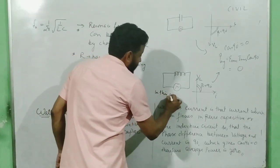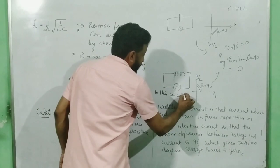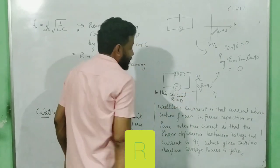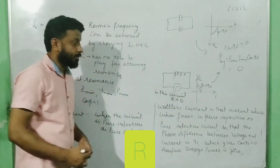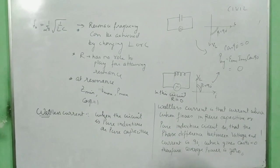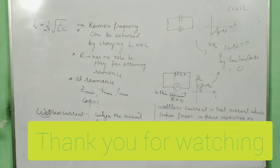In this circuit R is also equal to zero. With this, I conclude my lecture on AC current and we will meet again with a numerics session on this. Thank you.